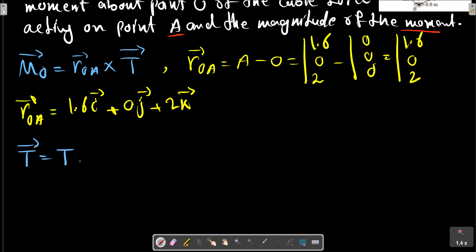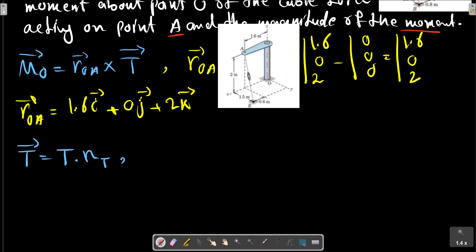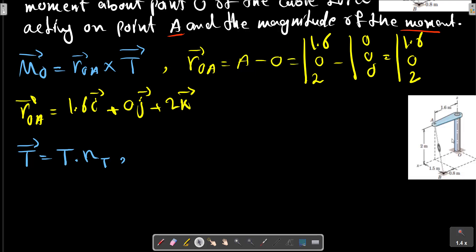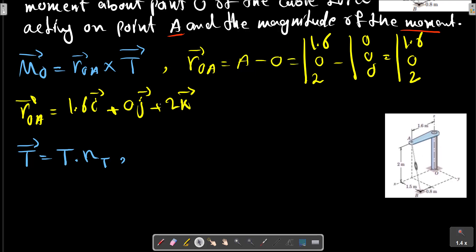And T - the value of T multiplied by n_T. Consider this picture again. T equals to the magnitude of AB.